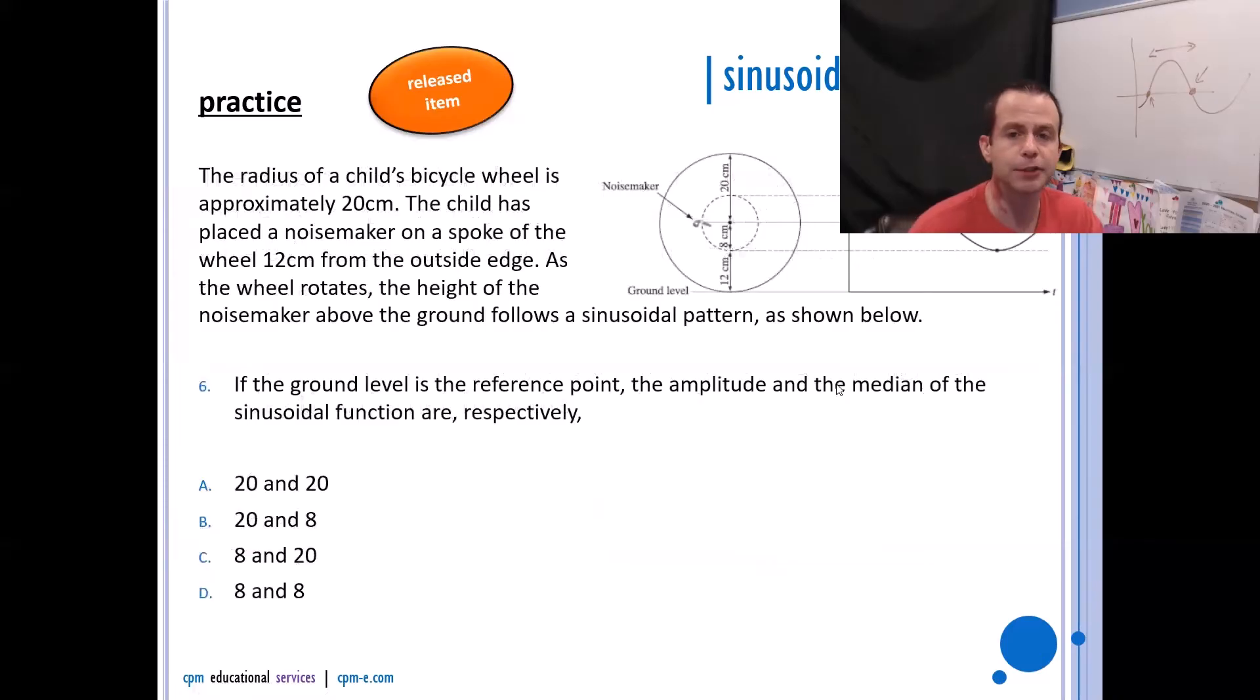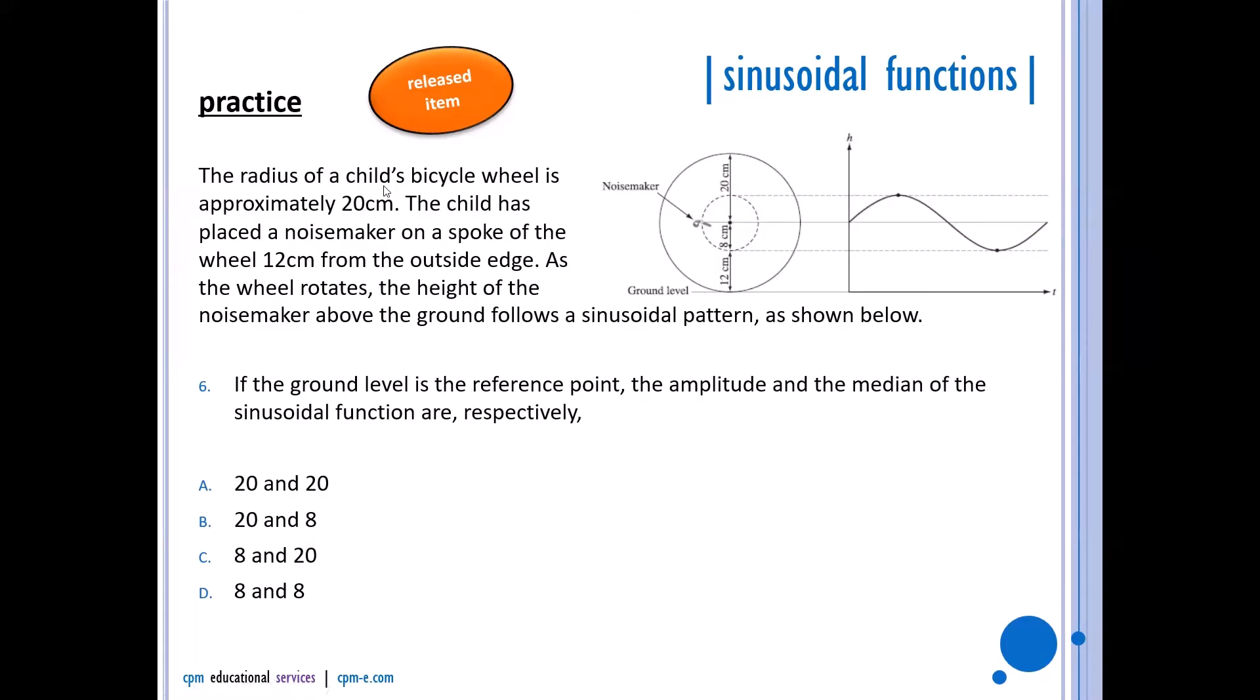Okay, the radius of a child's bicycle wheel is approximately 20 centimeters. The child has placed a noisemaker on the spoke of the wheel 12 centimeters from the outside edge. As the wheel rotates, the height of the noisemaker above the ground follows a sinusoidal pattern as shown below. So if the ground level is the reference point, what is the amplitude and median of the sinusoidal function?